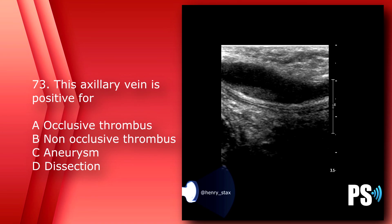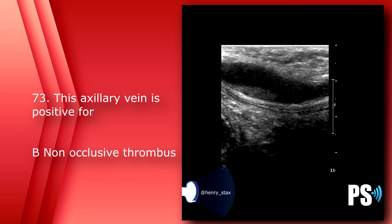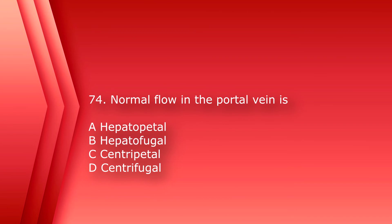Number 73: This axillary vein is positive for: A) occlusive thrombus, B) non-occlusive thrombus, C) aneurysm, or D) dissection. The answer is B, non-occlusive thrombus.